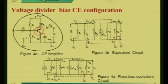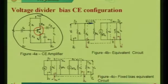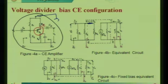Then that beta times RE, beta times RE and beta times IB is the current source, and R naught. Its equivalent circuit is given by this circuit. You have to transfer the other components while setting VCC to ground. When VCC is grounded, then this RB and resistance RC is connecting from emitter to collector, shown from collector to ground.